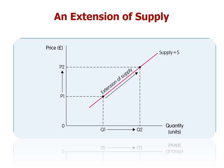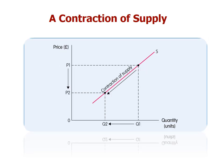An extension of supply occurs when supply moves from Q1 to Q2 because price has increased from P1 to P2 — quantity increases as price increases. Conversely, a contraction of supply occurs when price drops from P1 to P2, causing quantity supplied to drop from Q1 to Q2.